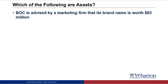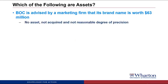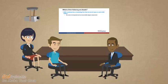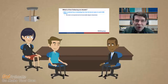BOC is advised by a marketing firm that its brand name is worth $63 million. This would not be an asset because it was not acquired in a past transaction or exchange, and you could argue that the value of the brand is not measured with a reasonable degree of precision. Accounting tends to err on the side of reliability and objectivity. Without a market transaction where we can be really sure we've acquired this resource and know how much it's worth, we err on the side of leaving it off the asset side. As a result, the value of a company on its financial statements is often far below its market value determined by investors, because investors could call this brand name an asset whereas the accounting system will not.